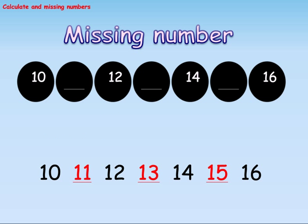Missing number: 10, dash, 12, dash, 14, dash, 16. The missing numbers from the given sequence are marked in red. That is, the missing numbers are 11, 13, and 15.